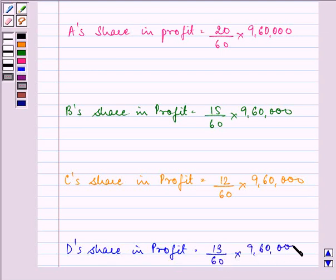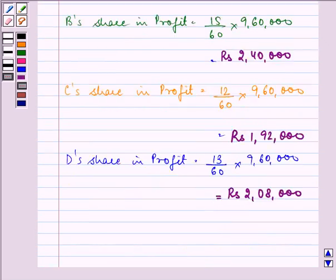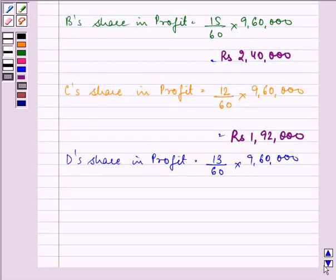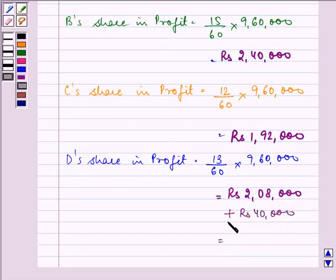Now after calculating we have the respective amounts as 3,20,000 to A, 2,40,000 to B, 1,92,000 to C and rupees 2,08,000 to D as their share of profit and D's total share is adding rupees 40,000 in it.